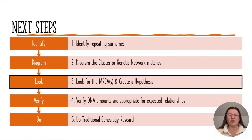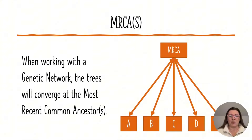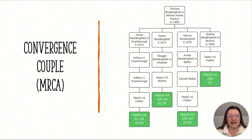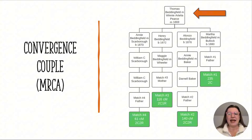Step number three is to look for the MRCA — the most recent common ancestors — and create a hypothesis. This genetic network or cluster converges at a specific couple, which I also call a convergence couple. These matches are converging at Thomas Beddingfield and Winnie Pierce. My hypothesis is that Thomas Beddingfield and Winnie Pierce are William Emmett Hunter's biological parents.